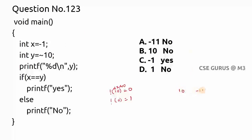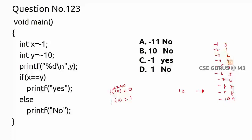What is the opposite number of 10? Is it minus 10? No, it is minus 11. Let us see how. Negative numbers start from minus 1, minus 2, minus 3... and positive numbers start from 0. So the opposite of minus 1 is 0, opposite of minus 2 is 1, and opposite of 3 is minus 4, opposite of 5 is minus 6. So if this is x, this is tilde of x.